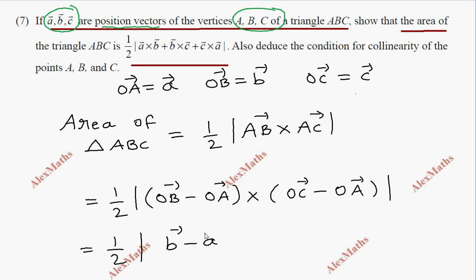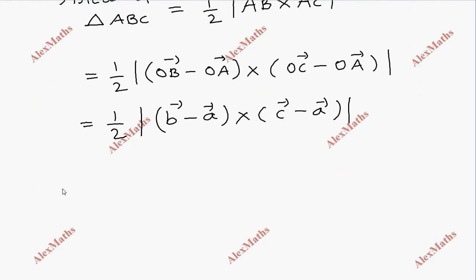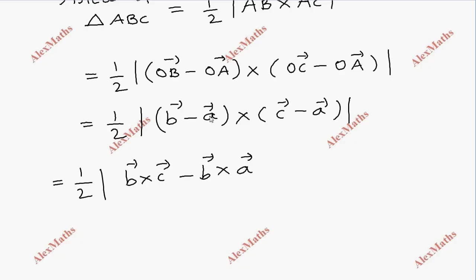So we have half of (b minus a) cross (c minus a). Expanding: b cross c minus b cross a minus a cross c plus a cross a. Now a cross a equals zero.